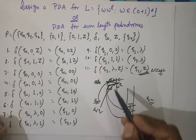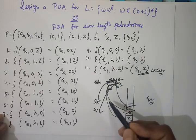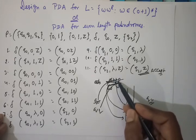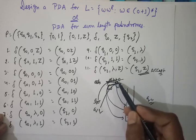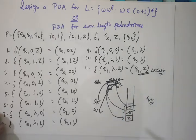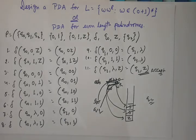Note that we changed state at the right point. If we had changed state after reading '0, 1, 1' instead of after '0, 1', then although the string is in the form WW^R, it cannot be accepted. We would try another alternative. If the string is in form WW^R, there must be at least one alternative following which the string can be accepted.